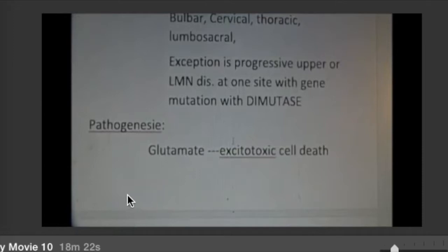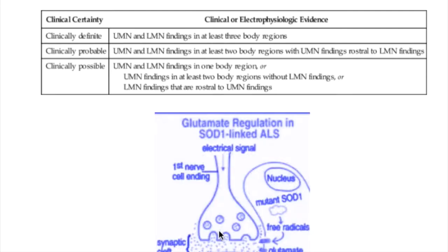Pathogenesis of ALS: it is due to the excessive activity of glutamate. Glutamate is the most abundant excitatory neurotransmitter in the brain and it causes excitotoxic cell death. This occurs due to the diminished activity of the glutamate transporters at the synaptic cleft, so that the excitotoxicity of the glutamate affects the postsynaptic neurons.